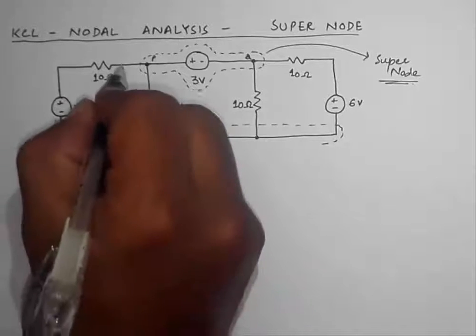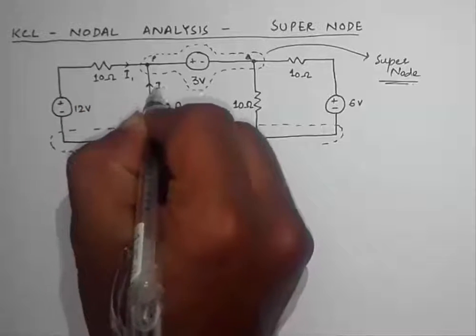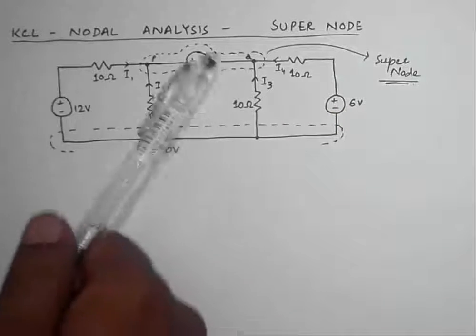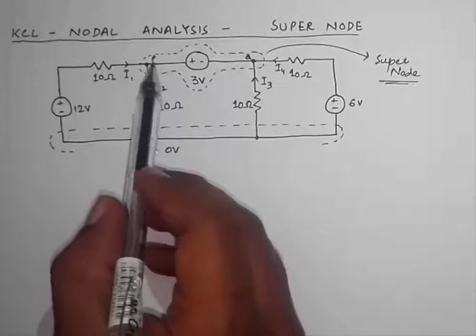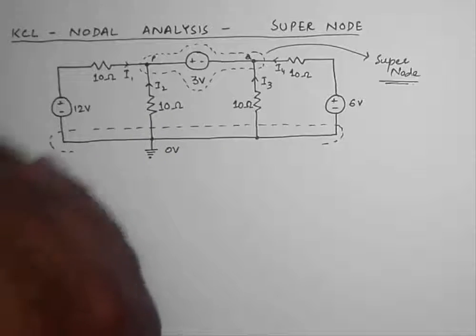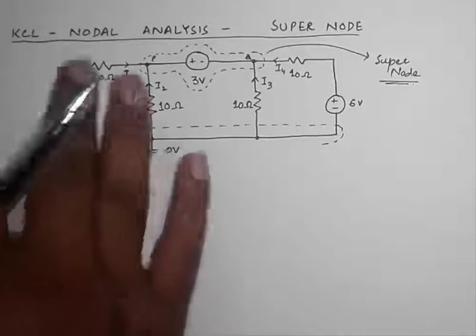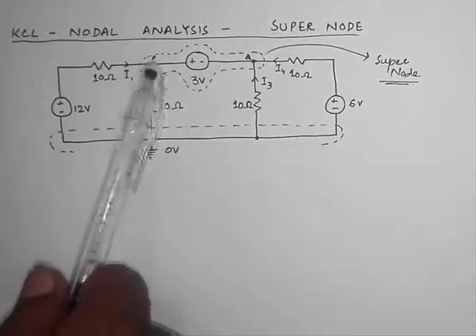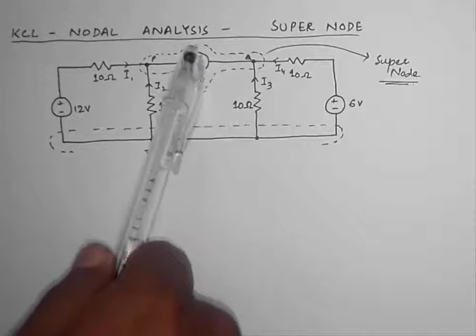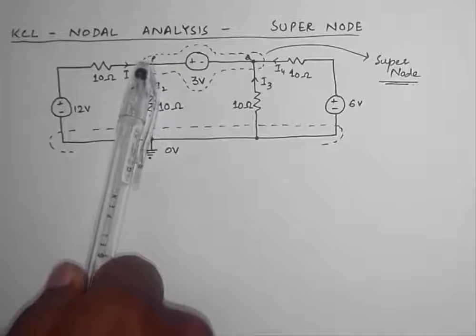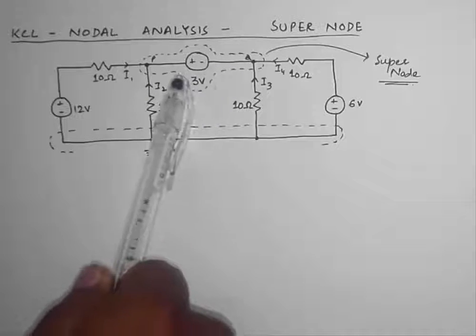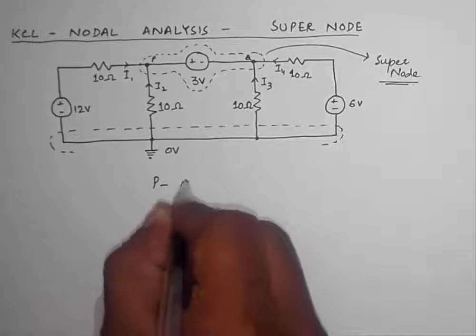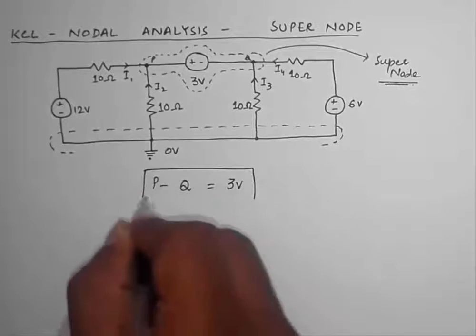First of all we are going to assume the direction of currents. I am going to assume all the currents — I1, I2, I3, and I4 — are entering into the supernode. Then I am going to do a step that is a little different from what we usually do in nodal analysis. Since there is a voltage difference between P and Q caused by this voltage source — and we already know what that is — it is a 3 volt voltage difference. So I am going to write P minus Q is equal to 3 volts, and I am going to name this equation A.